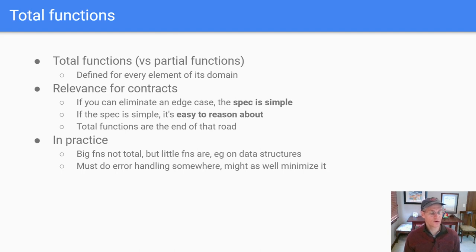So let's talk about total functions. Total functions are compared with, or contrasted with, partial functions. That is, total functions are defined for every single element of their domains. And the reason this is relevant for contracts is sort of like the following sequence of thinking. First, if you can eliminate an edge case, then the spec is simple. If the spec is simple, it becomes easy to reason about. So if you just keep applying that to your code and saying like, can I eliminate my edge cases to keep simplifying my contracts? You end up in a situation where your method is so easy, it doesn't have to exclude any corner cases. And it just says, this is the way I operate across my domain. So total functions are the end of that road.